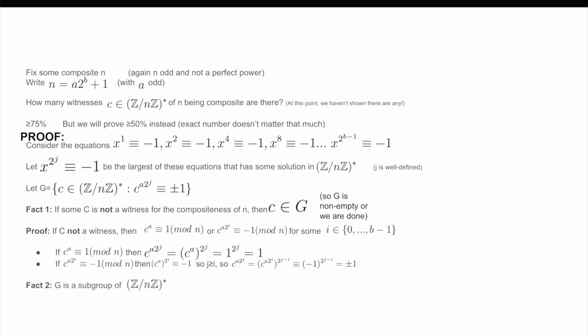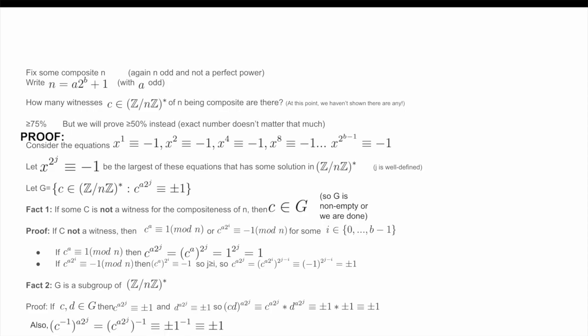Secondly, we must prove that G is a subgroup of Z/NZ*. Note that if c and d are elements of G, then c^(A·2^j) is ±1 and d^(A·2^j) is also ±1. So therefore, (cd)^(A·2^j) = c^(A·2^j) · d^(A·2^j), which is ±1 times ±1, which is just going to be ±1. So therefore, G is closed under multiplication. Also, (c⁻¹)^(A·2^j) = (c^(A·2^j))⁻¹ ≡ (±1)⁻¹ = ±1. So G also contains inverses, and by group theory these two facts together imply that G is a subgroup of Z/NZ*.